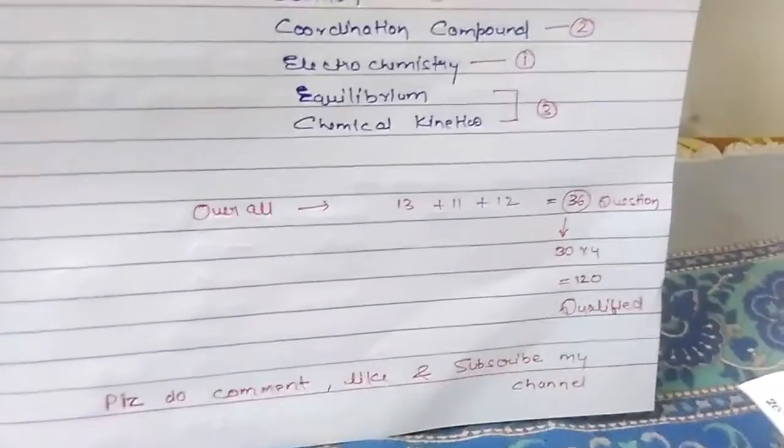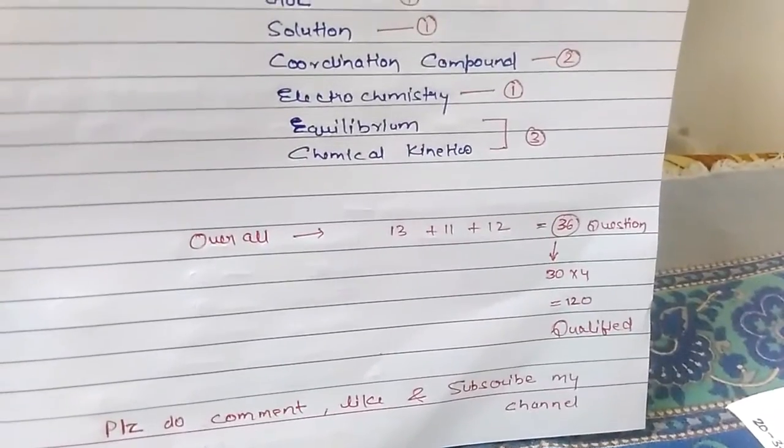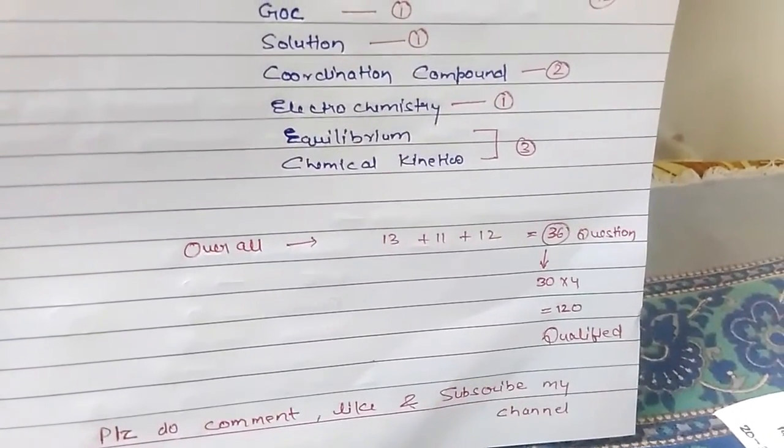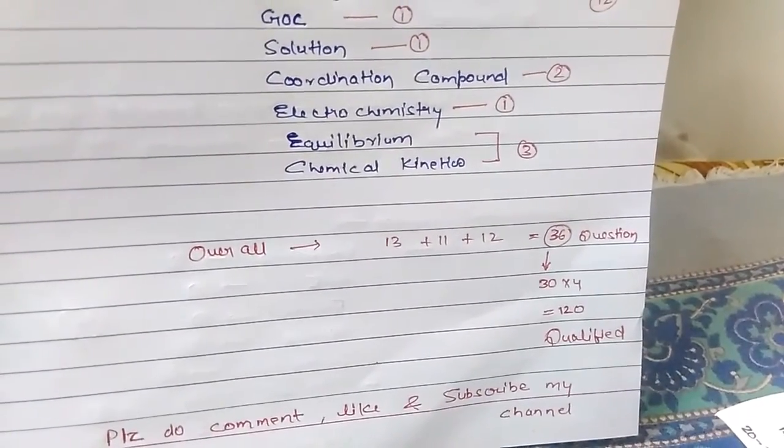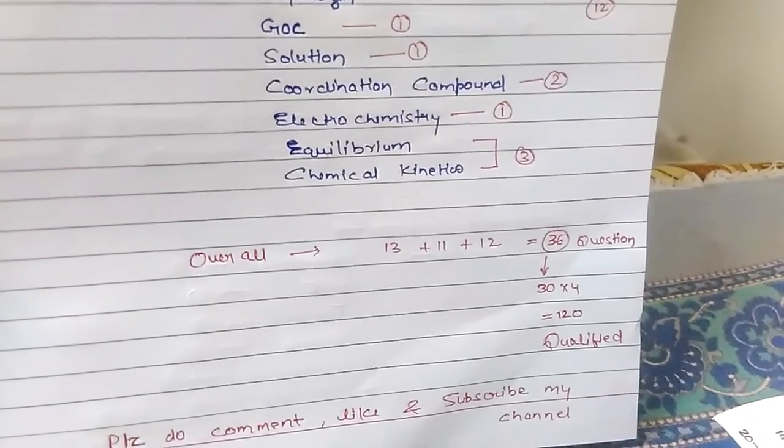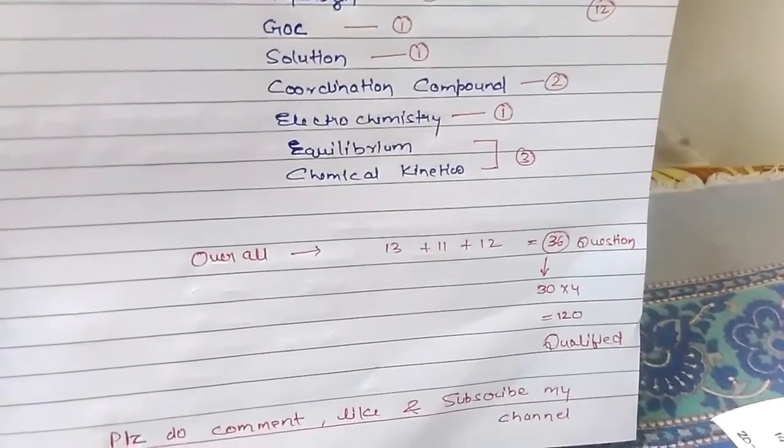Overall, 13 plus 11 plus 12 equals 36 questions. Approximately, you can easily score 30 questions. That is 13 into 4, 120 marks, qualified.